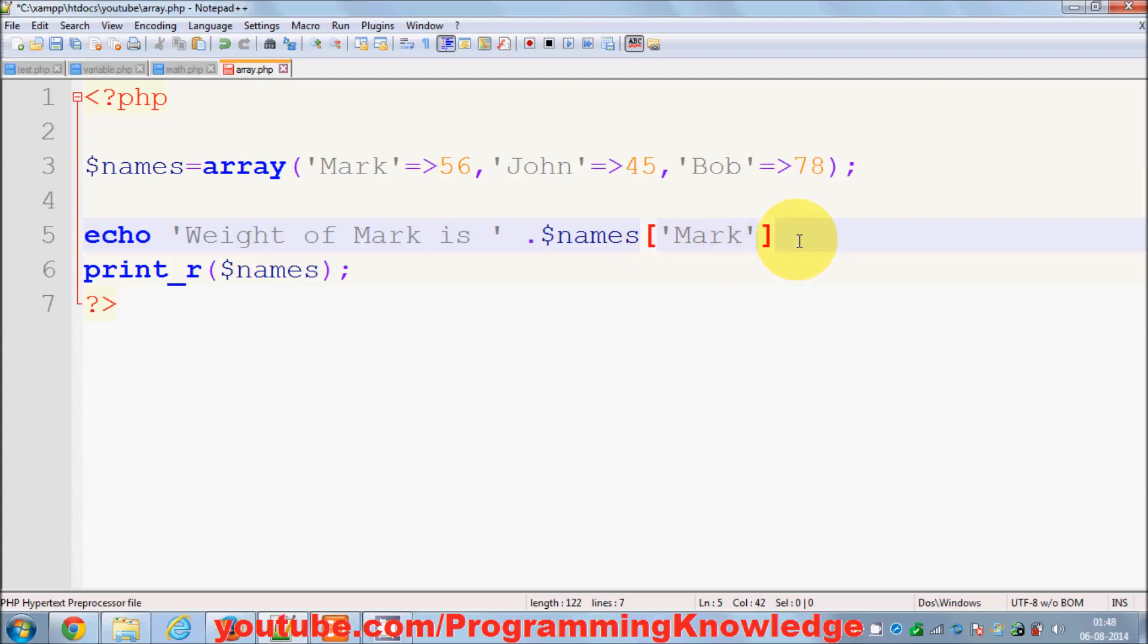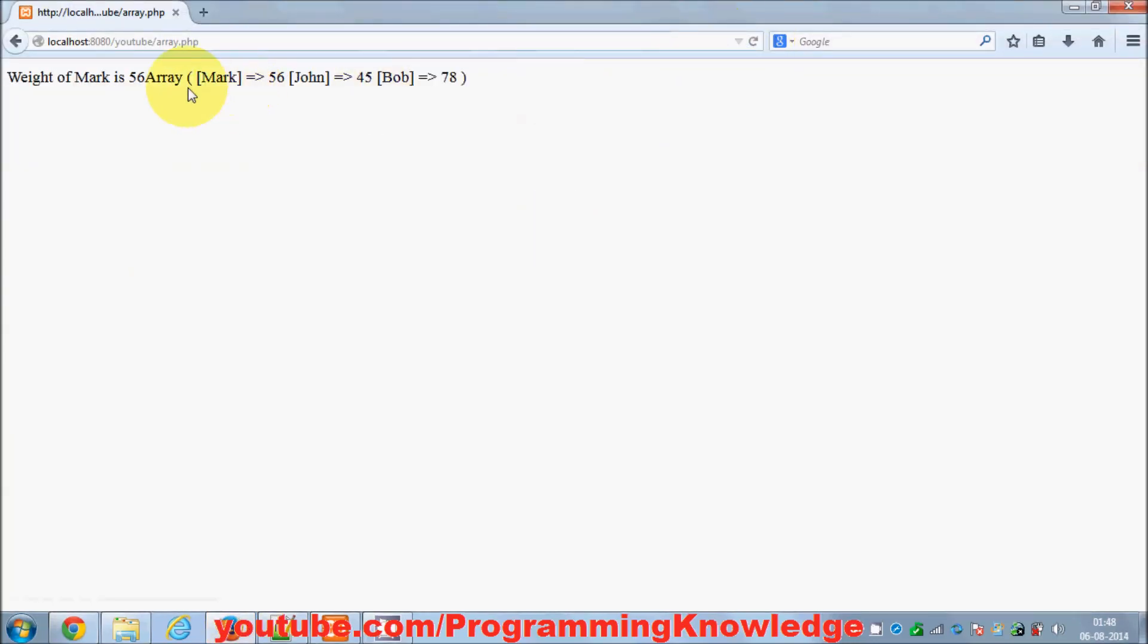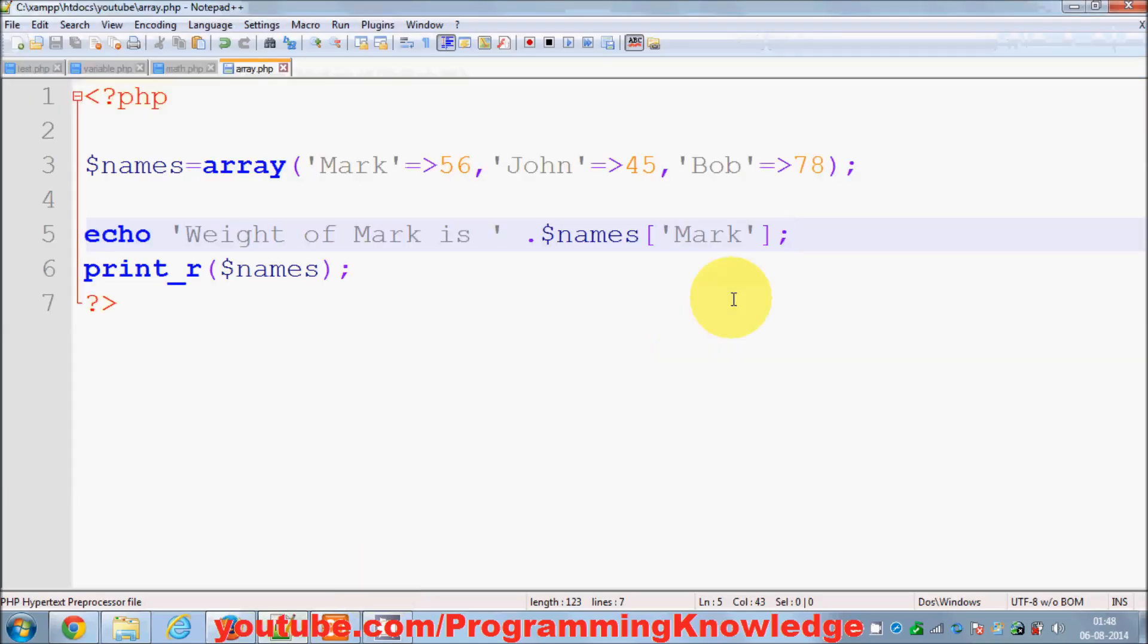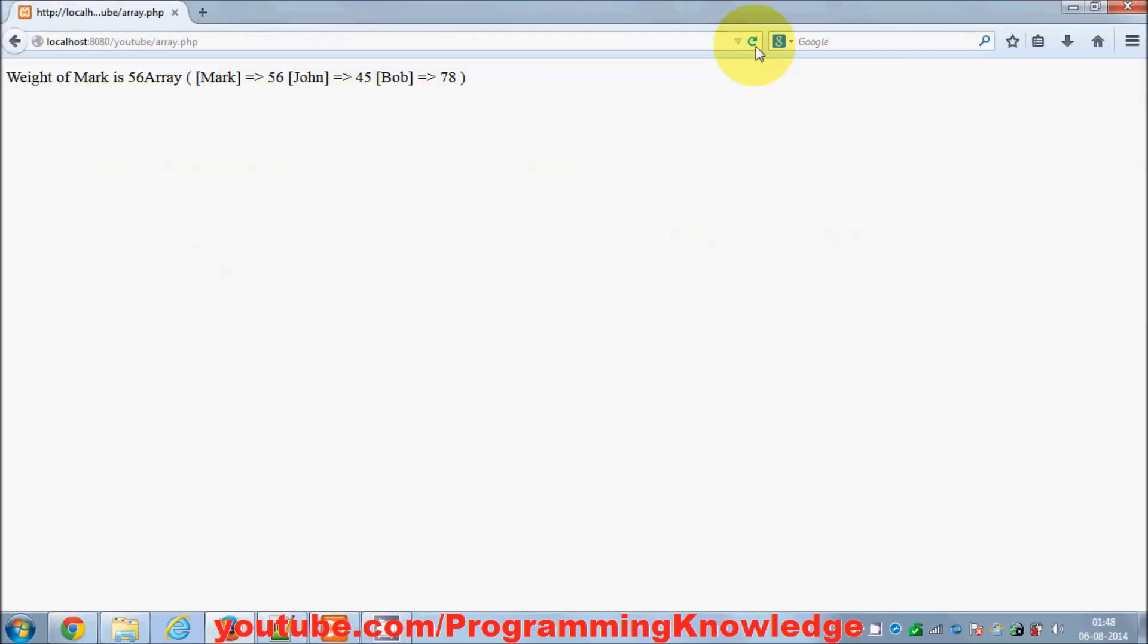this key, paste it inside these brackets, and give a semicolon here. Now when you run this, you will be able to see 'weight of Mark is 56'. I can also give a little break tag so that the second line will be printed on the second line. And now when I refresh it, you see the weight of Mark is 56. So you can print all the array values on the basis of